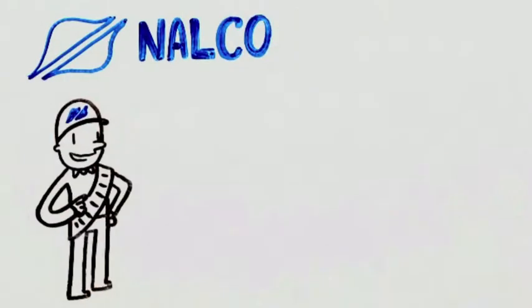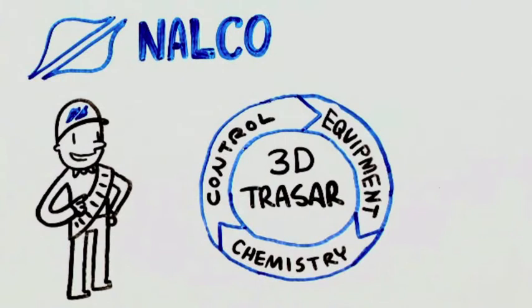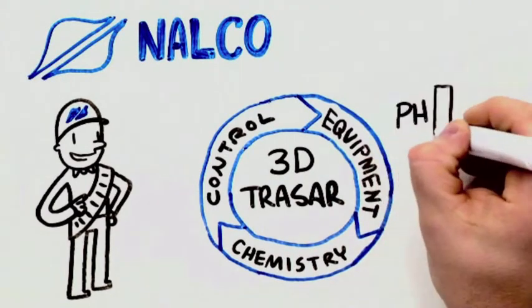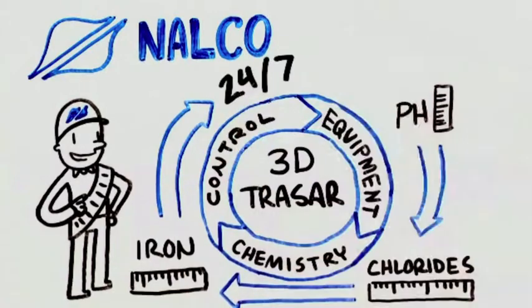NALCO understands those challenges. We combine chemistry with equipment and control schemes like 3D TRASAR for crude units, allowing us to continuously measure pH while measuring chlorides and iron up to 24 times per day.